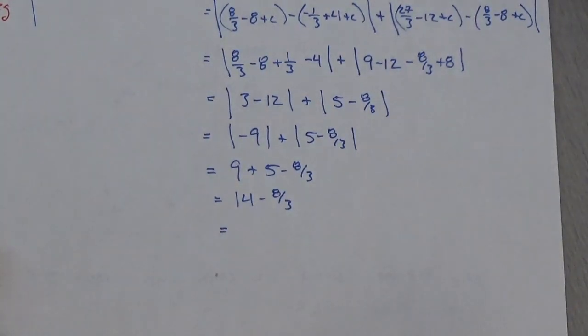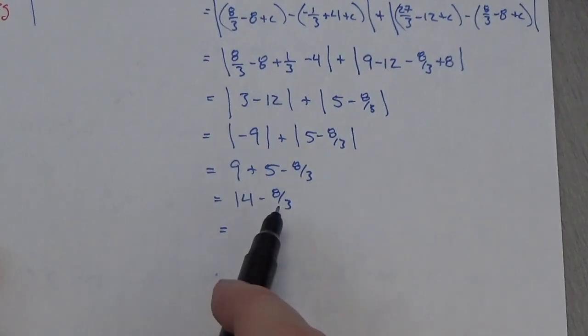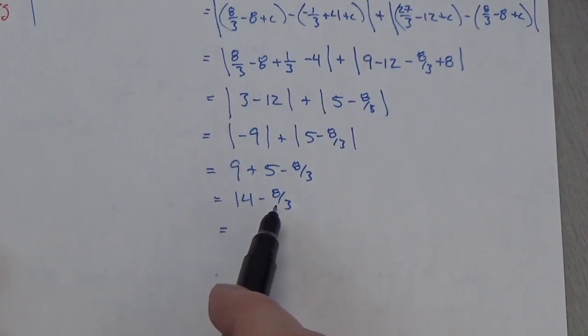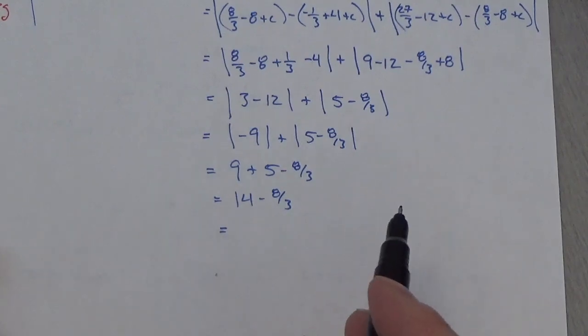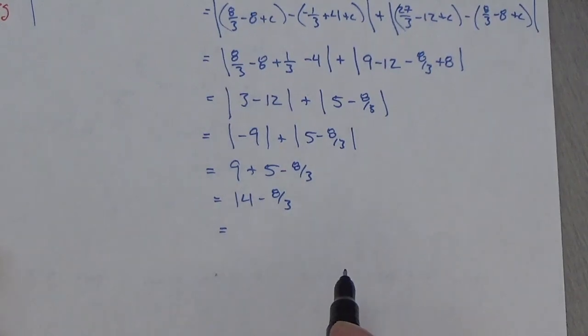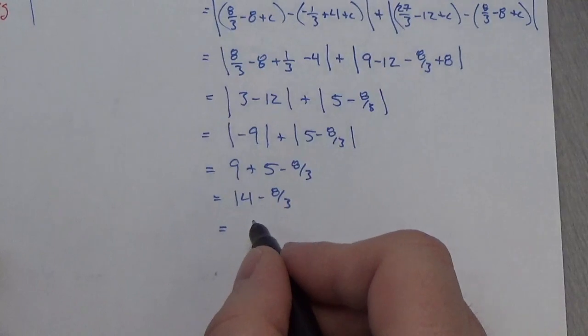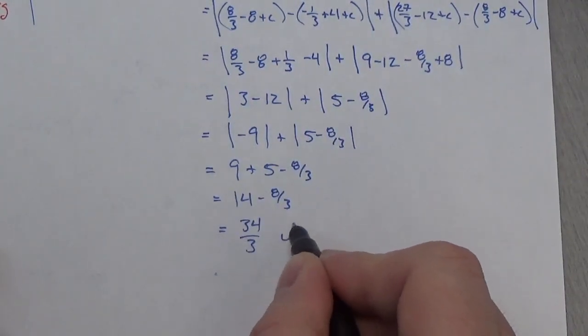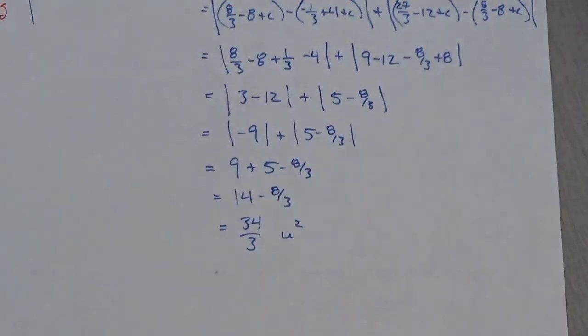well, 8 thirds, 8 thirds is going to be 2 and a third. So, this is going to be 2 and 2 thirds, so I'm going to get 11 and a third, but I don't like mixed fractions, so I'm not going to write 11 and a third, I will write 34 thirds units squared. That's what we want.